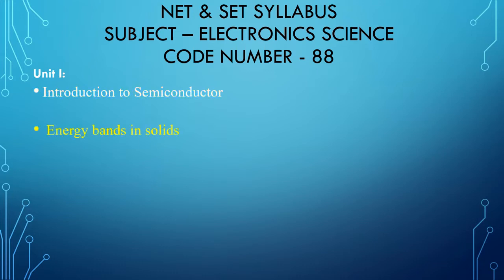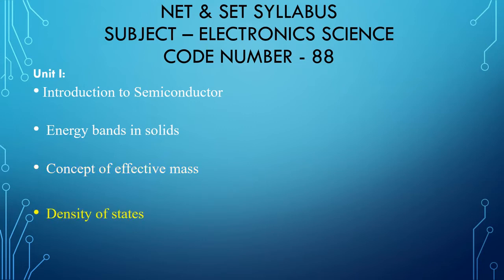The next topic is Energy Bands in Solid, which is also in Unit 1 — the second topic. The third topic of Unit 1 is Concept of Effective Mass. The fourth topic of Unit 1 is Density of States, and the fifth topic of Unit 1 is Fermi Levels. We will cover these topics in detail in this session, so that we can easily understand the Electronic Science subject and the Semiconductor device.